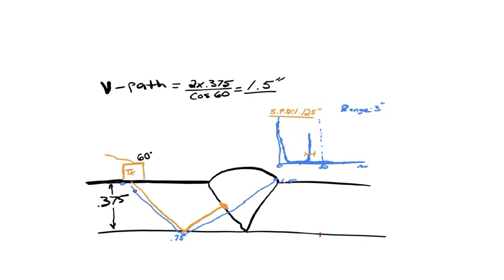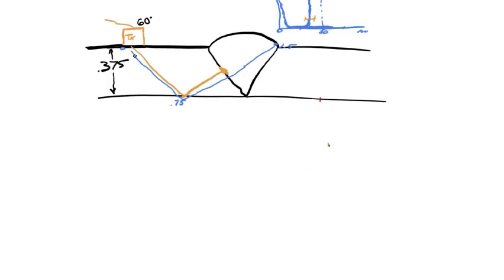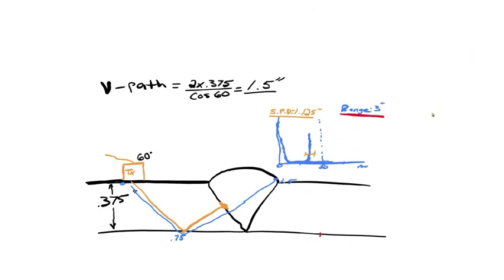Looking at our A-scan, we have an indication with a screen path distance of 1.125 inches. With a three inch range, that's around 30 percent. The important thing to note is that our defect is at 1.125 inches, which is beyond our first leg but not yet beyond our second leg, so we are somewhere out in here.